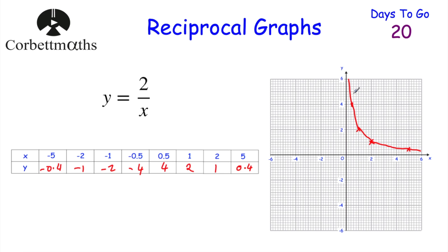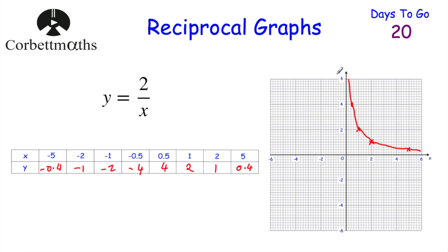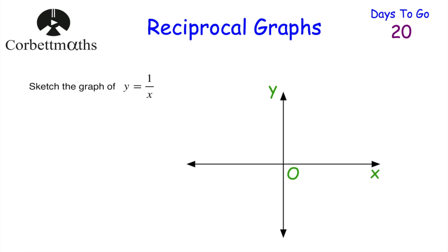We've plotted the points on the right-hand side of the y-axis - that looks like the reciprocal graph we looked at before. We had 4 over x before, here we've got 2 over x. As the value above x gets bigger, it just moves out slightly. Now let's draw the negative side as well - that's the full shape of the reciprocal graph. It's important to know that shape.